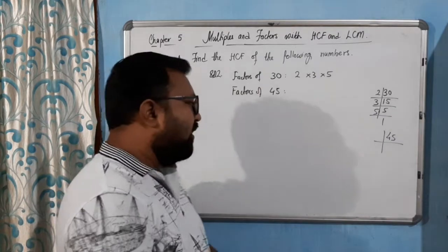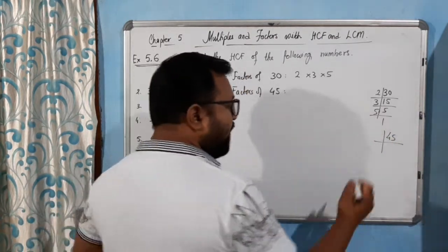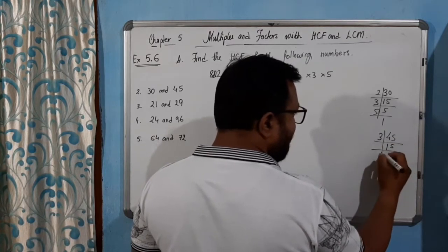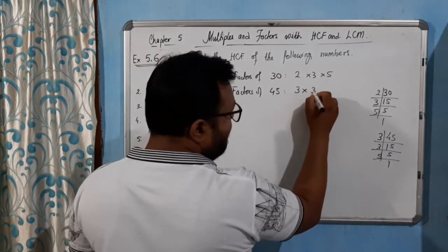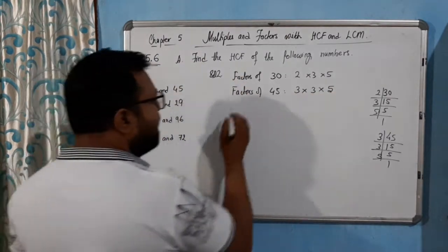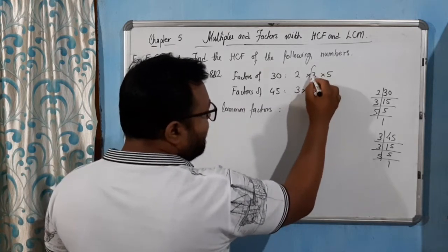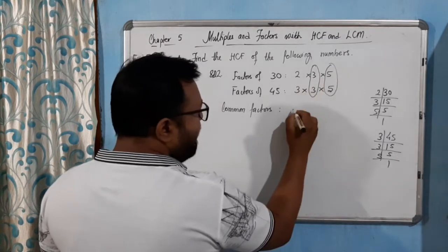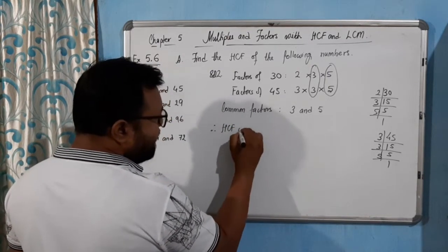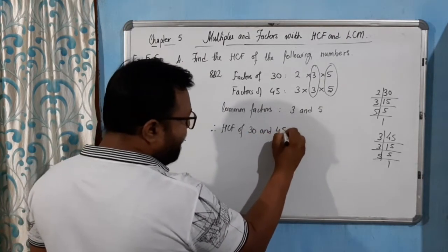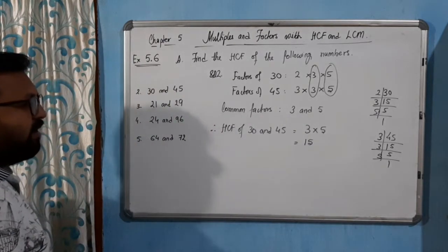For 45: it is an odd number, not divisible by 2. Adding the digits: 4 + 5 = 9, which is a multiple of 3, so divide by 3 to get 15, then 15 by 3 to get 5. So 45 = 3 × 3 × 5. The common factors of 30 and 45 are 3 and 5. Therefore the HCF of 30 and 45 is 3 × 5 = 15.